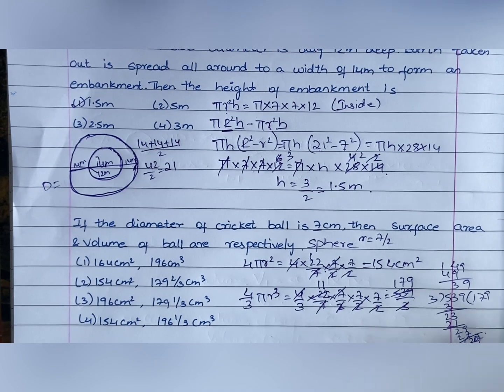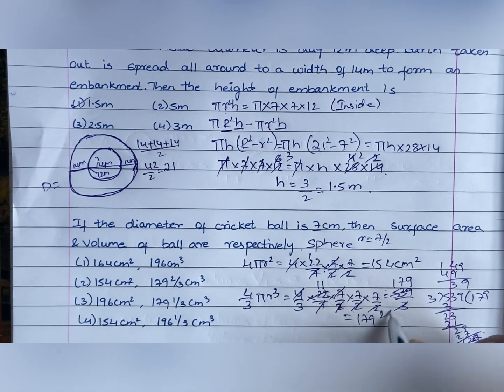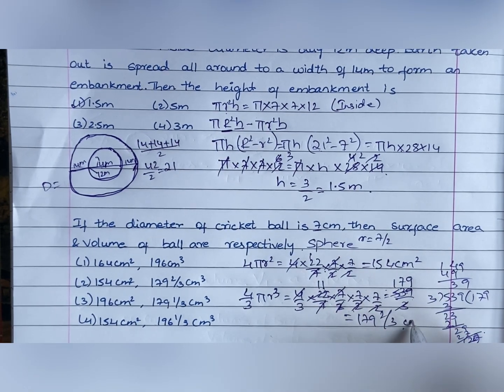So, with remainder 2, it will be 179 and 2 by 3 is the answer. Centimeter cube.